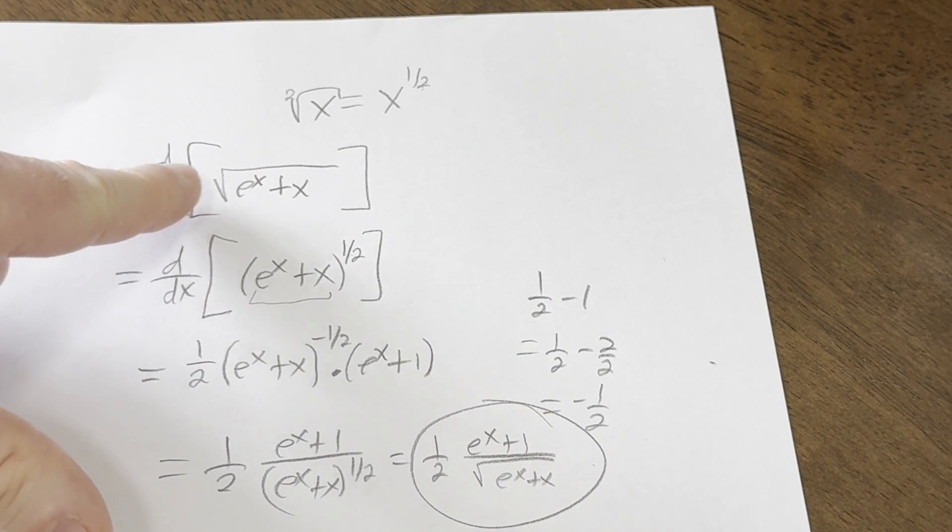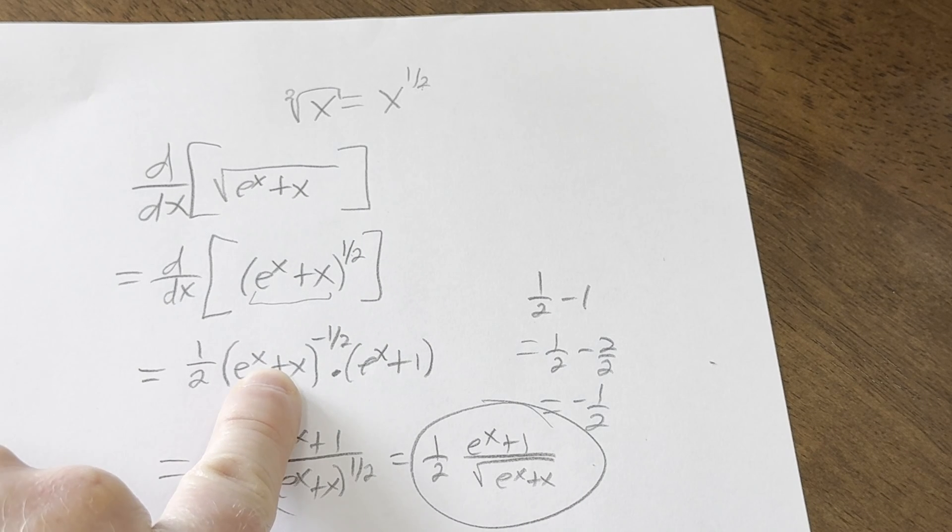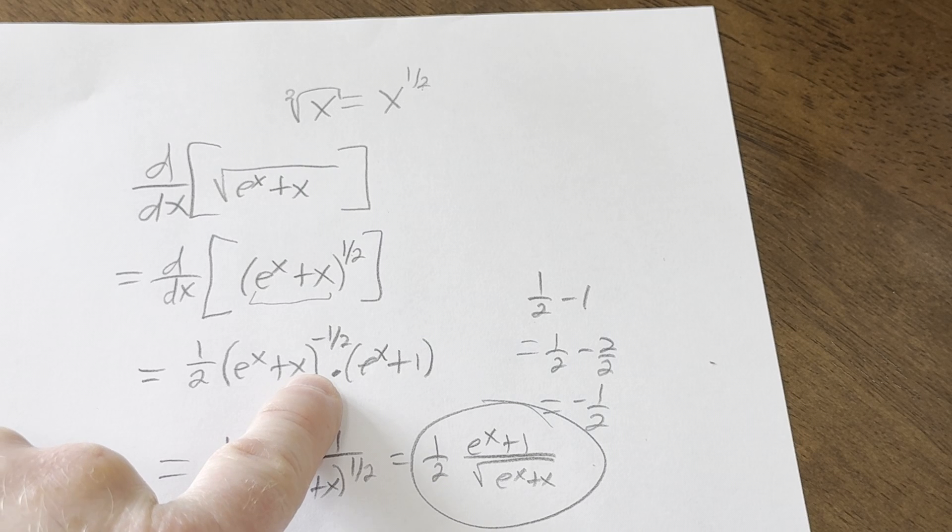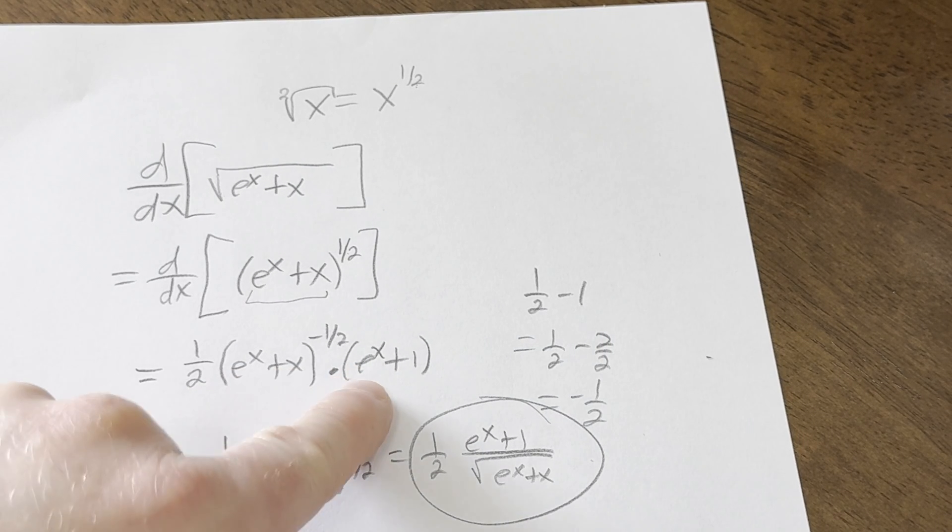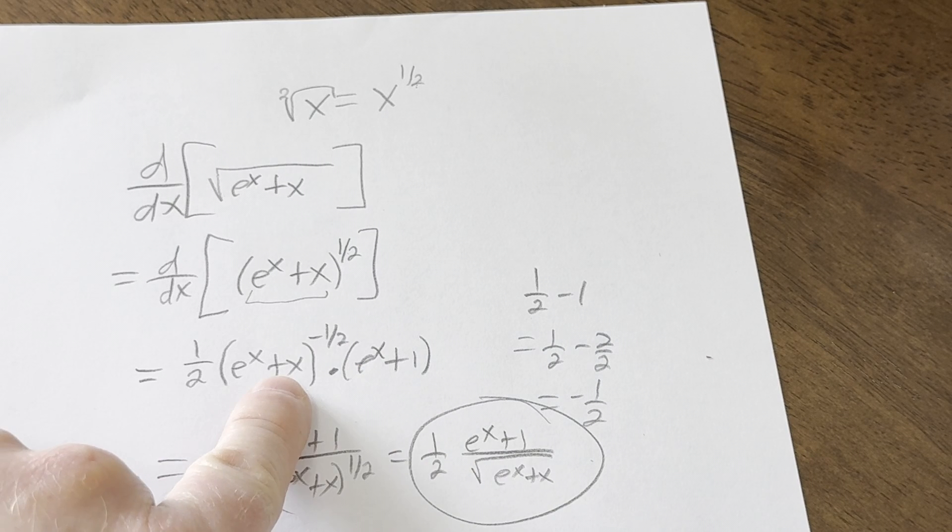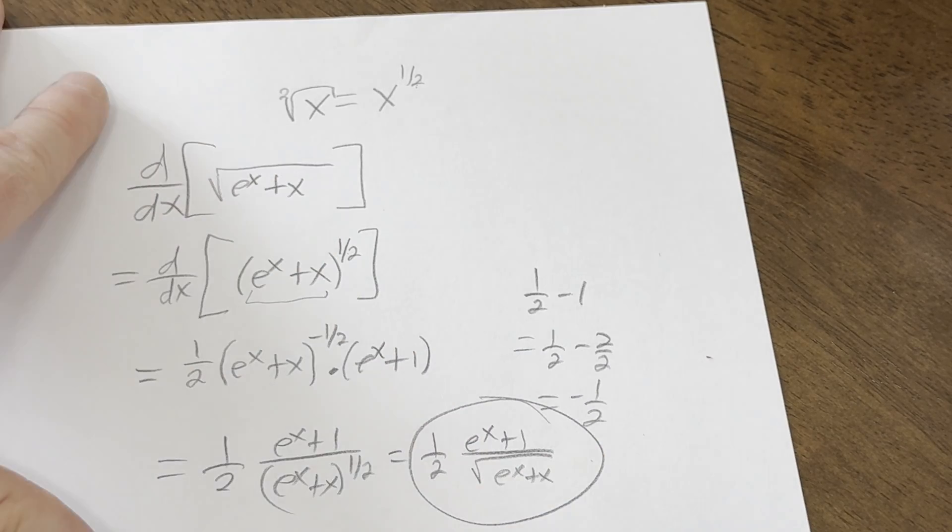So again, the first step is to write it as a power function. Then you use the chain rule. Bring down the 1 half, leave the inside untouched. Subtract 1 from the exponent. That's us using the power rule. Times the derivative of the inside function, right? The inside function is e to the x plus x. The derivative of e to the x is e to the x. The derivative of x is 1. Boom, there we go. We bring this downstairs. And here we are. And we can't do anything else. So that would be it.